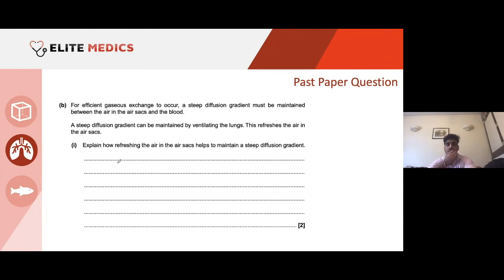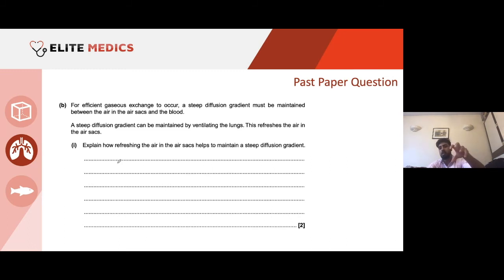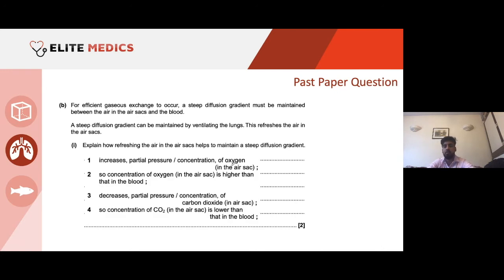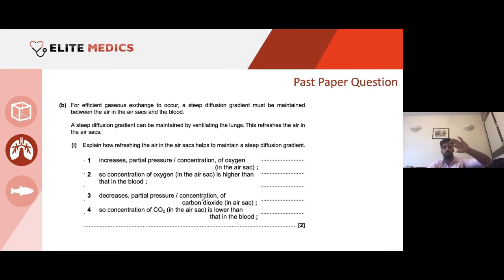For efficient gas exchange to occur, a steep diffusion gradient must be maintained between air in the air sacs and the blood. A steep diffusion gradient can be maintained by ventilating the lungs, which refreshes the air. If we remove CO2 from the air sacs, more CO2 from the blood can diffuse in, because there's no build-up. By moving more O2 into the alveolus, more oxygen can enter the blood supply. This increases the partial pressure of oxygen in the air sac, maintaining a steep concentration gradient for oxygen moving into the blood.